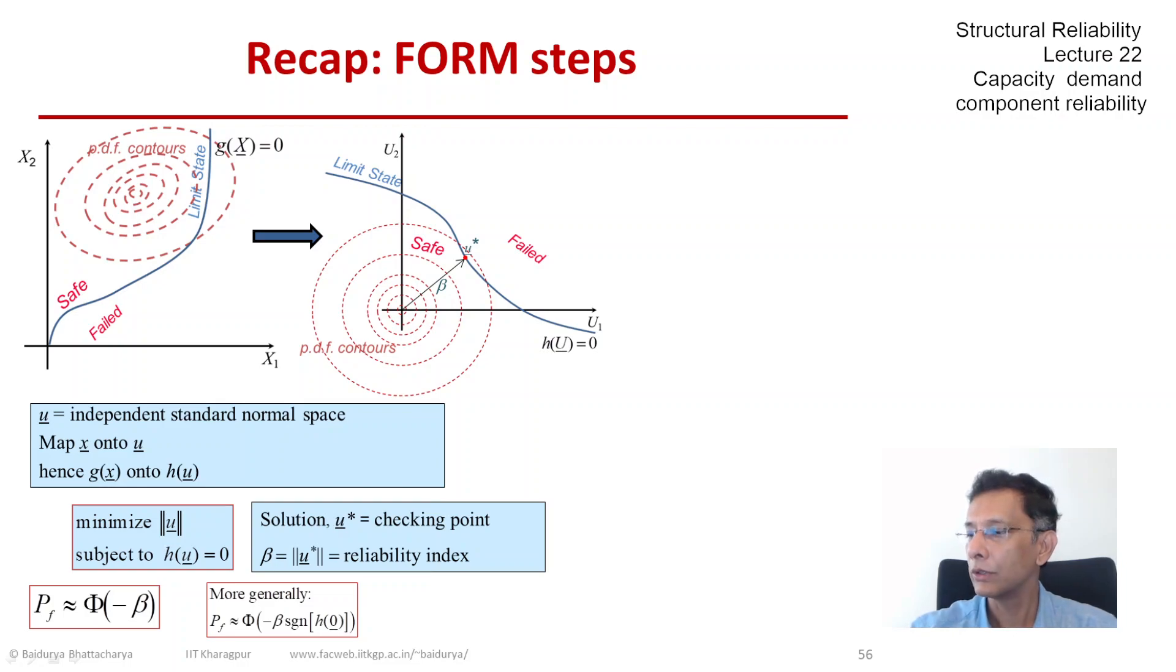Pictorially speaking, this is what we do. We map x onto u and the new limit state h equals 0 in terms of u and the PDF contours are nice concentric circles around the origin in u space. And we find the minimum distance beta to the minimum distance point u star.